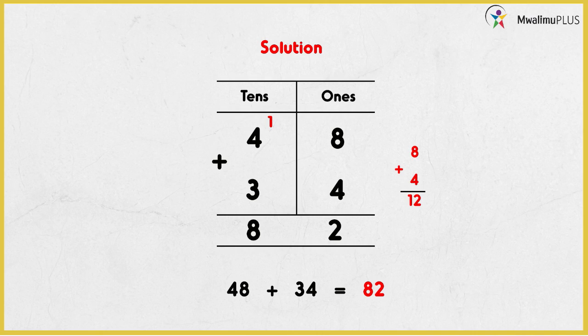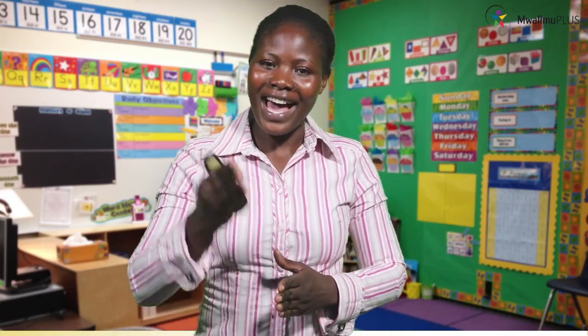Now let's add the digits in the tens column. In tens, we have 1, 4, and 3. Can you add 1 plus 4 plus 3? What do you get? 8. Correct. So you write 8 in the tens place value. Therefore, we've added — what is our correct answer? 82. 48 plus 34, you get 82. Remember, in this activity, we have done what we call regrouping. That was as easy as we have done. I hope you did it well — bravo!